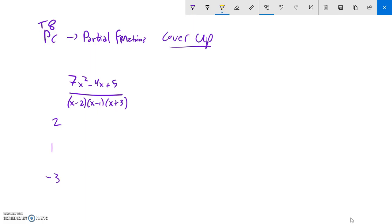So, let's do cover-up method. If I'm going to use two, I cover up the factor that makes me divide by zero. And then I plug two into what's left. So, I have 7 times 2 squared minus 4 times 2 plus 5 over, plug it in here, 2 minus 1, plug it in here, 2 plus 3. Whatever number I get is going to go over x minus 2 in my partial expansion.